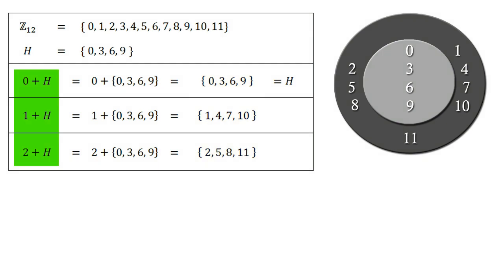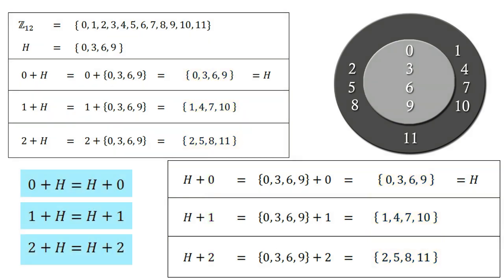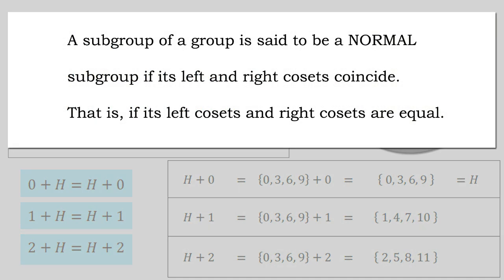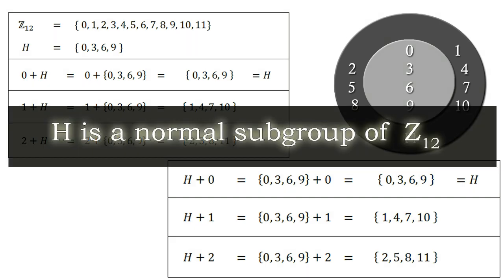Why left? Because we added the numbers to the left of the subgroup H. If we add these numbers to the right of H, we get the right cosets of H in Z12. Comparing both sets, we find the left cosets and right cosets are exactly equal. By definition, a subgroup is a normal subgroup if all its left and right cosets are equal. So H is a normal subgroup of Z12.